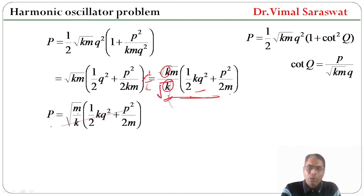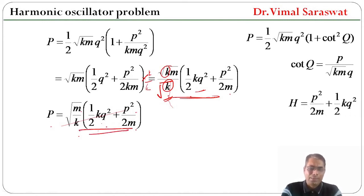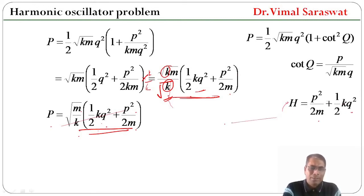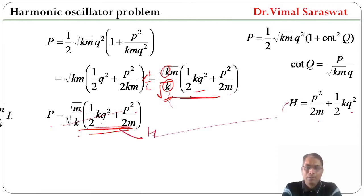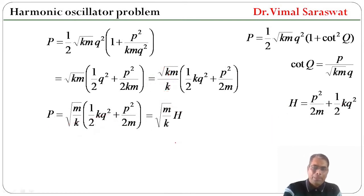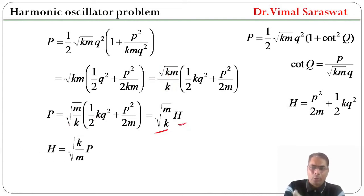Since the Hamiltonian of the given harmonic oscillator is H = p²/2m + ½kq², the expression (½kq² + p²/2m) can be replaced with H. Therefore, P = √(m/k) · H, or equivalently, H = √(k/m) · P.